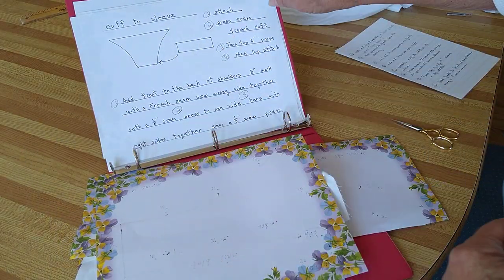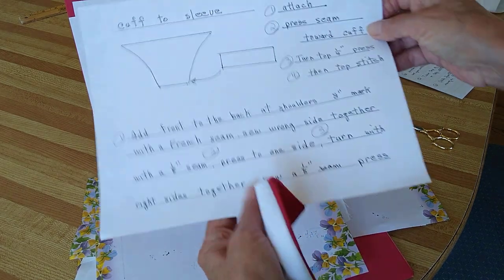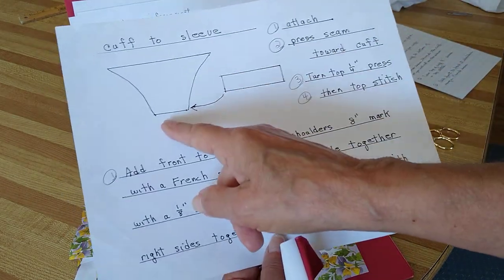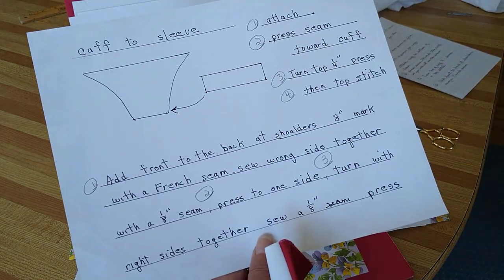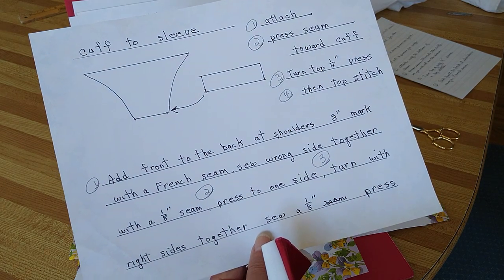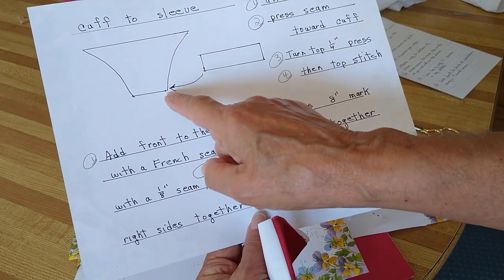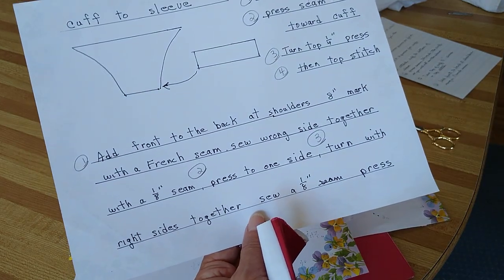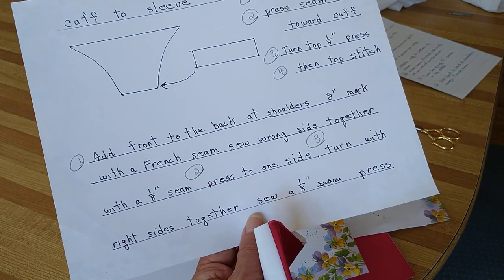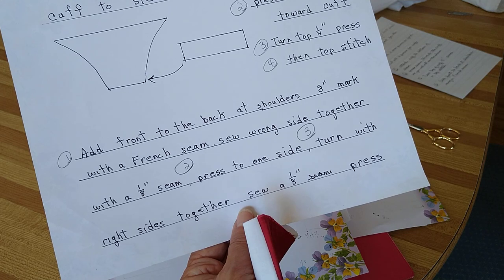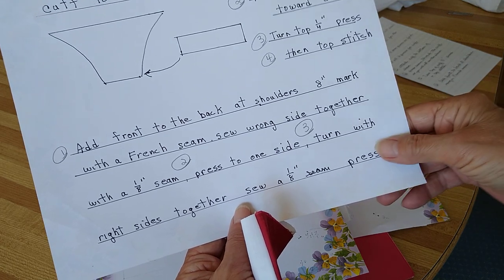Now you're going to take the cuff and the cuff is going to get attached to the bottom of the sleeve. After you attach this you're going to press the seam toward the cuff this time and then you're going to turn it a quarter of an inch and top stitch it.